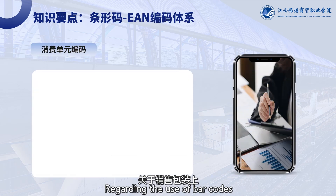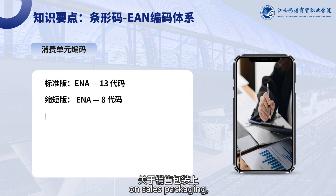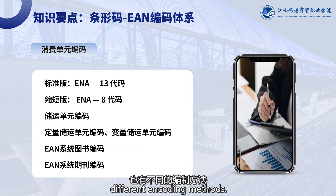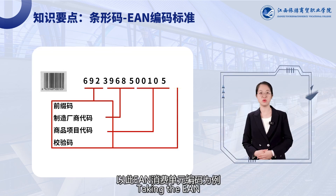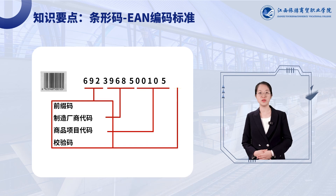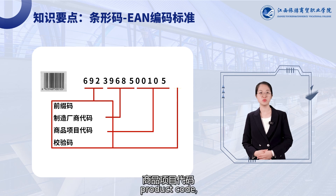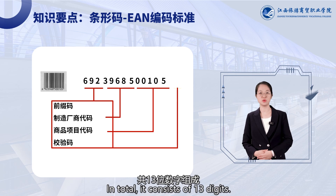Regarding the use of barcodes on sales packaging, there are also different encoding methods. Taking the EAN consumer unit code as an example, it consists of a prefix code, manufacturer code, product code, and a checksum. In total, it consists of 13 digits.